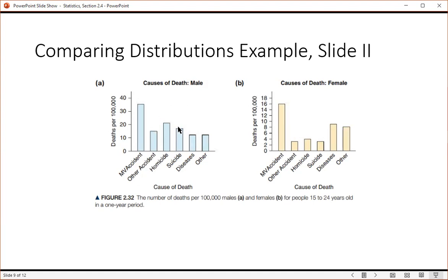So for males, there's more diversity, there's more variability. There's a more equal cause of death, other than the motor vehicle accidents. Whereas for women, it's more concentrated in diseases and other, and then you have less variability, less diversity because these other categories are much smaller bars.